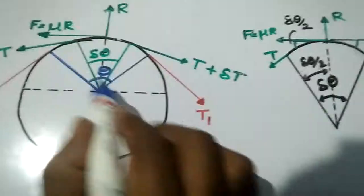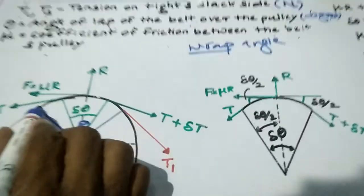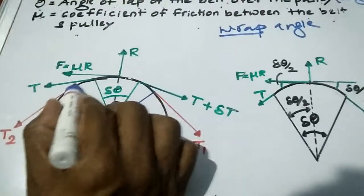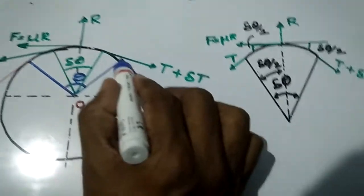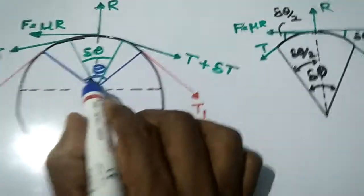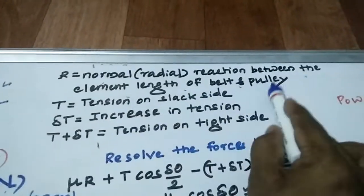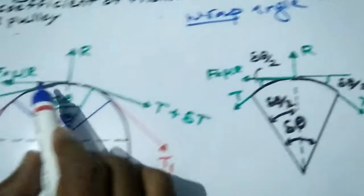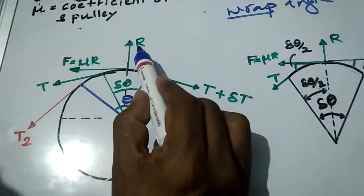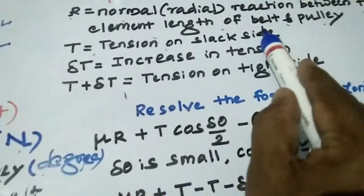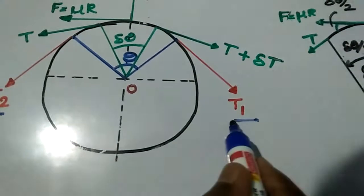The angle of lap means the angle from where the belt starts to where the belt ends contact with the pulley — that is theta, the amount of belt placed on the pulley. The next nomenclature is R, the normal reaction between the element of belt and the pulley. T1 and T2 are the initial belt tensions on the tight side and slack side respectively.